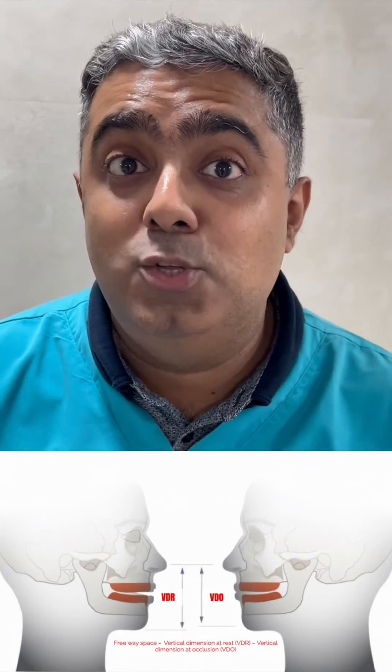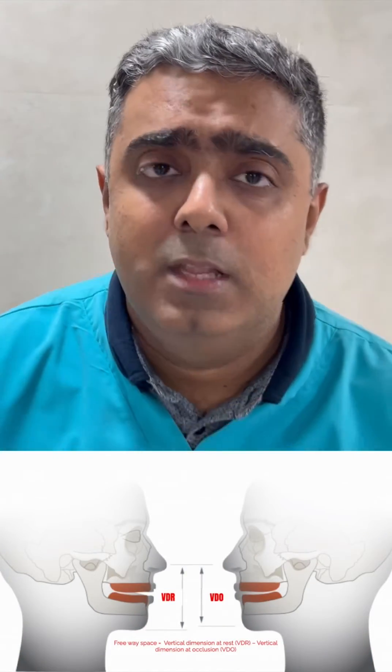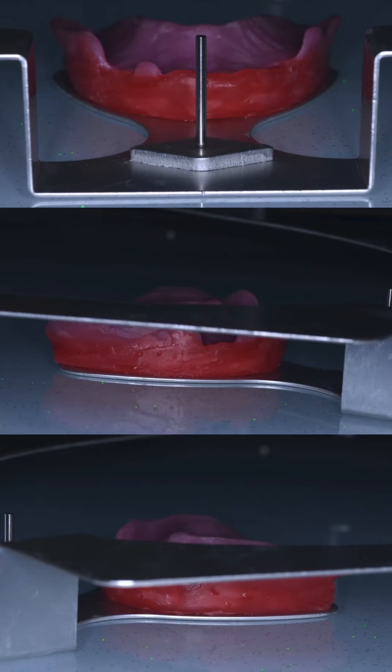Let's talk about completely edentulous jaw relations today. Here's a tip on how to adjust the maxillary wax rim using the maxillary occlusal plane analyzer. The starting point of your jaw relation is adjusting the maxillary occlusal rim — how would you adjust it, and what planes of reference would you use?